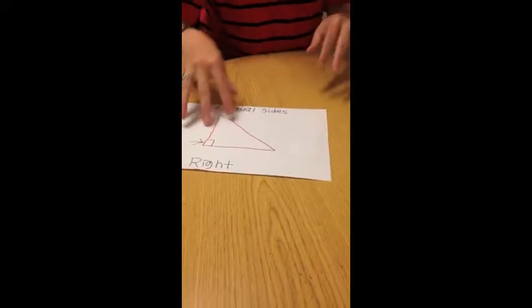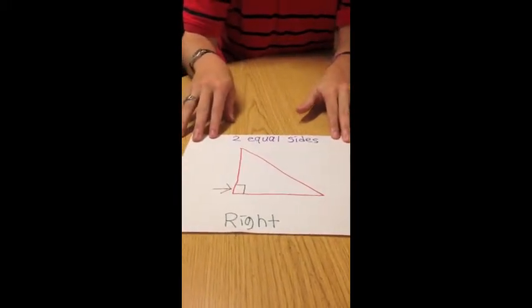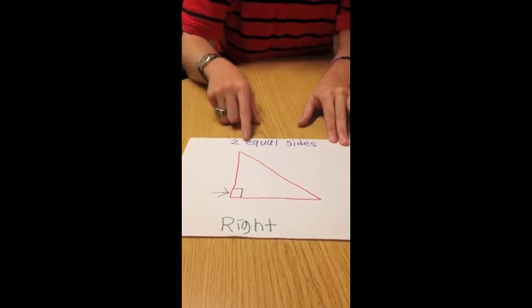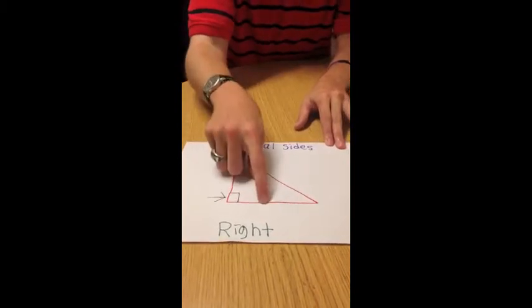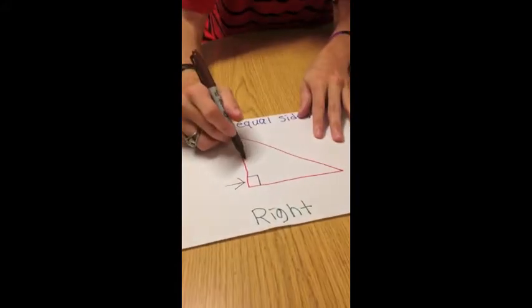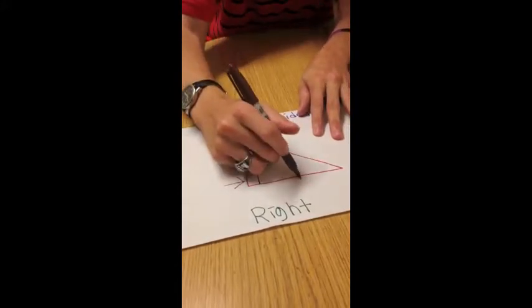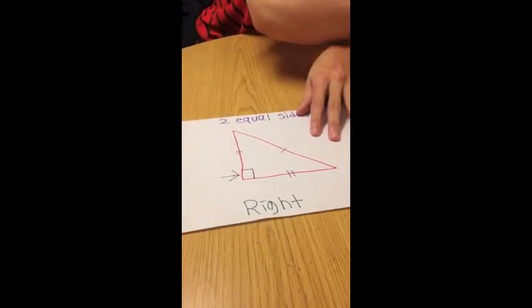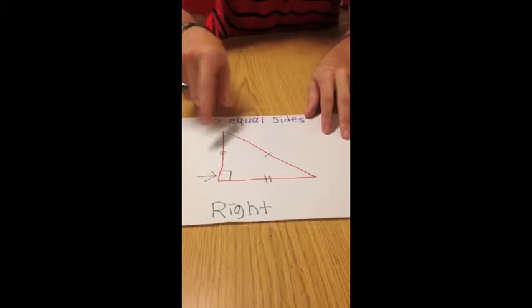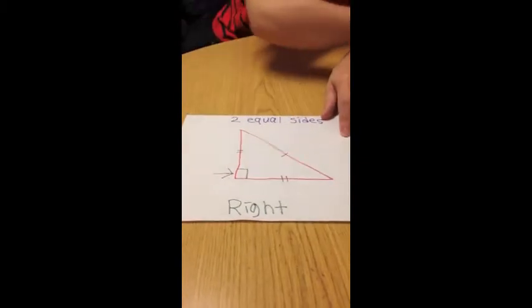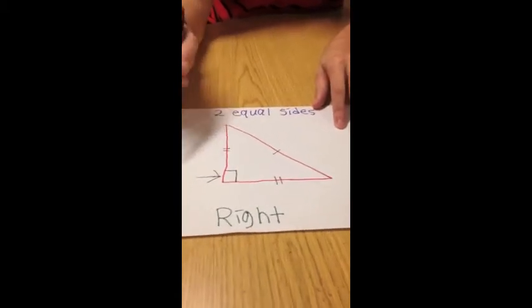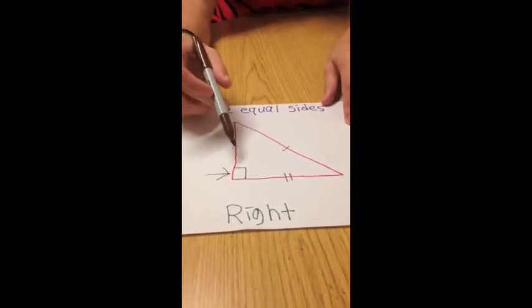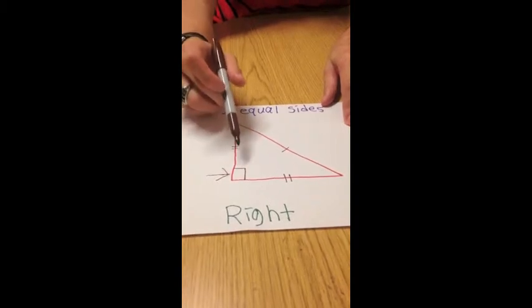The second type of triangle that I'm going to demonstrate would be the right triangle. The right triangle also has two equal sides, and then the hypotenuse being the biggest side. The nice thing about right triangles is they have this mark right here, this half box, that designates that that is a 90 degree angle.